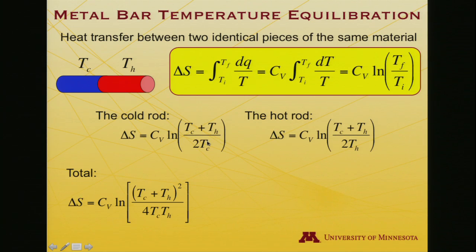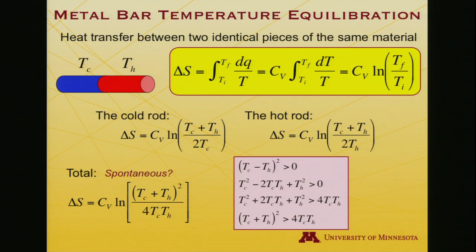And so the total entropy is the sum of the two of these. A sum of logarithms is like a log of a product. So if I take the product of the numerators, I get a TC plus TH quantity squared. If I take the product of the denominators, I get 4 TC TH. And I can ask now, will this be spontaneous? It'll be spontaneous if delta S is greater than 0. Well, how can I establish that? Here's a little proof that this is greater than 1. And in order to prove that, I need the numerator to be greater than the denominator. If that's always true, then I have log of a number greater than 1, delta S will be greater than 0, the heat flow will be spontaneous.